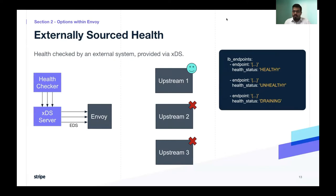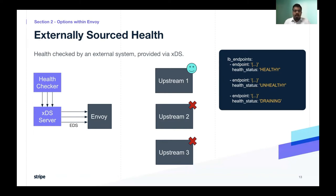Let's now look at the final option, which is externally sourced health. In this case, Envoy doesn't use any traffic between itself and the service to figure out the status of these upstream services. Envoy instead relies on the XDS server to inform it about the status of each upstream service. There is an external health checker component which feeds this information to the XDS server, and then Envoy uses the EDS mechanism — the endpoint discovery service — to figure out if a given endpoint is healthy or not. In this case, we have marked the first upstream as healthy, the second as unhealthy, and the third instance as draining. Envoy can therefore route to the first healthy instance and refrain from routing to the second or third.